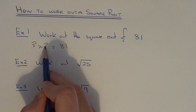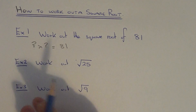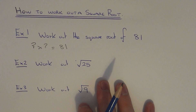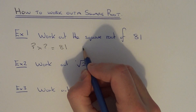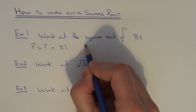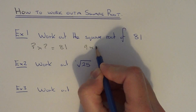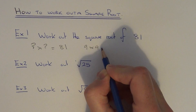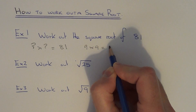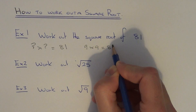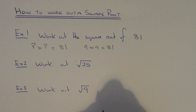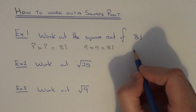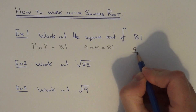These two numbers must be the same. The number we're looking for is 9 because 9 times 9 is equal to 81. So the square root of 81 is 9.